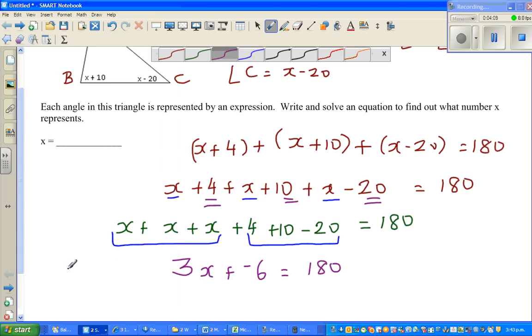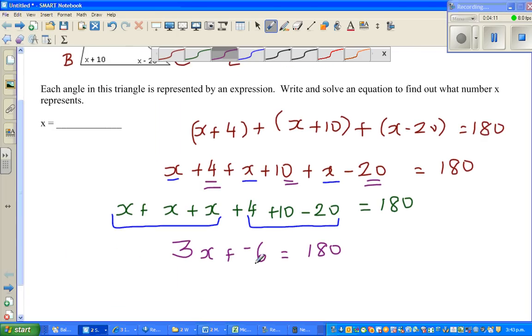So here, adding minus 6 is same as taking away. So I can write 3x minus 6 is equal to 180.